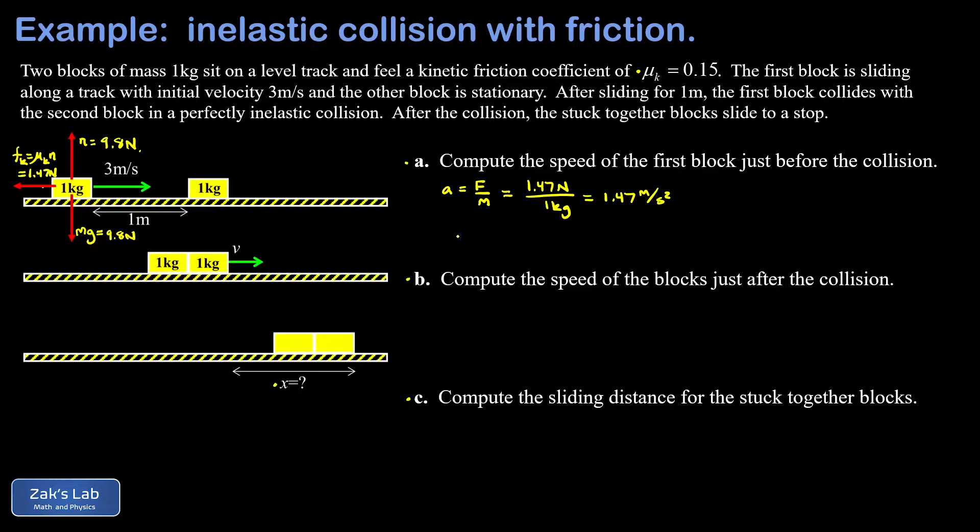So we want the speed of this block after it slides for one meter. And there's a kinematics equation that gets this done in one step. It's the time independent equation. V squared is equal to V naught squared plus 2A times the quantity X minus X naught. X naught is our initial position, which we're going to call zero. And to find the final speed, I just have to plug everything in on the right-hand side and take the square root.